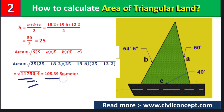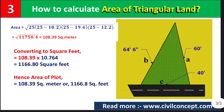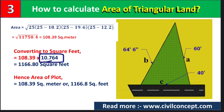This result is in square meters, so we need to convert it into square feet. The area is 108.39 square meters. To convert to square feet, we multiply by 10.764, which is the constant conversion factor. After calculating, we get 1166.80 square feet.